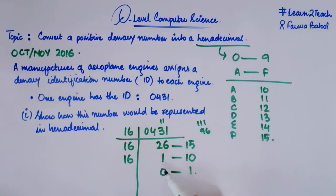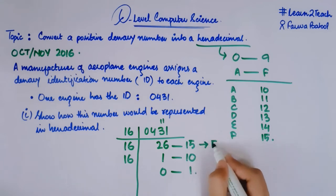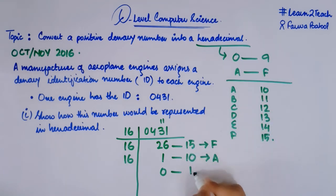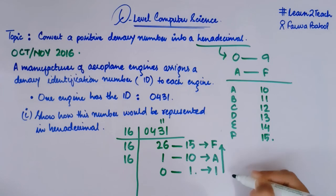After that what we need to do, we need to convert these remainders in terms of hexadecimal digits. This 15 will be equivalent to F in hexadecimal number system. This 10 is equal to A and this 1 will remain the same 1. So what is the hexadecimal number? We need to write these remainders in an upward direction, starting from the lower one that is 1, then I have A, then I have F. So this is my hexadecimal number that I need to find in this question.